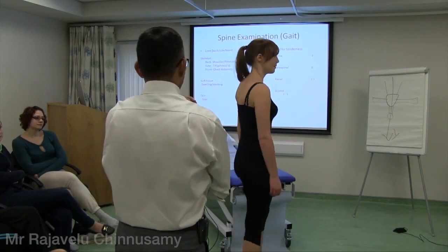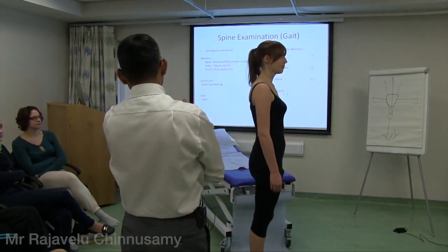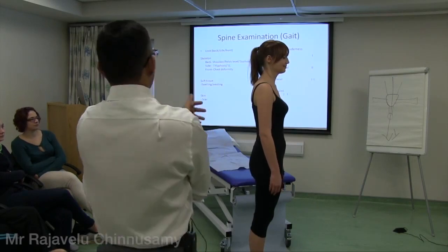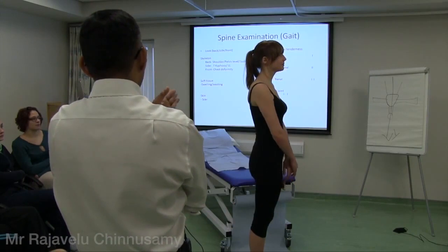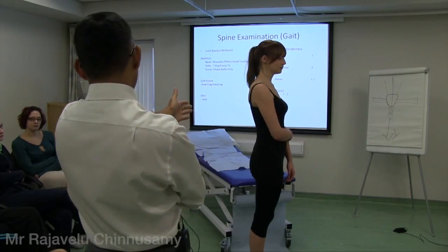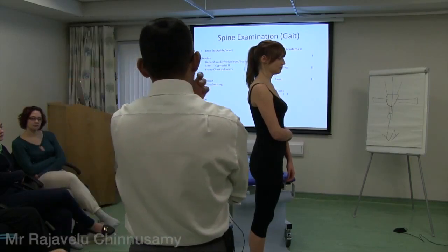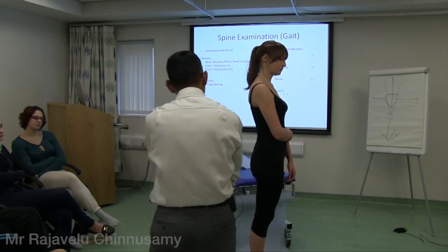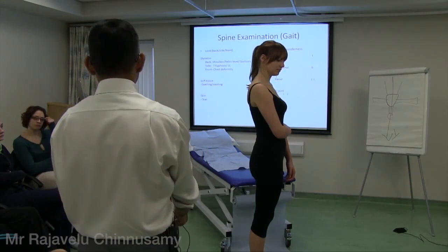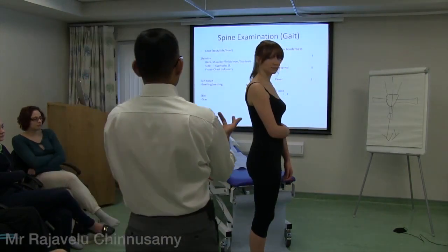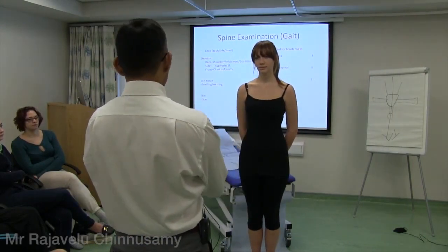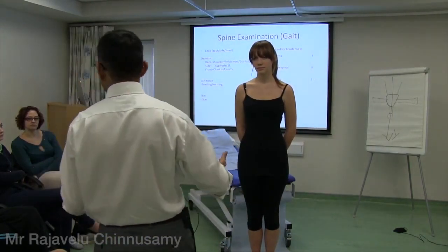Can you turn to the side for me please. From the back: no obvious swelling or wasting, skin is normal. From the side: normal thoracolumbar curvature is maintained - thoracic kyphosis and lumbar lordosis. No obvious swelling, wasting, skin is normal. You can even have a scar on the side of the abdomen from spinal surgery. From the front: no obvious deformity, no scar in the abdomen or chest.